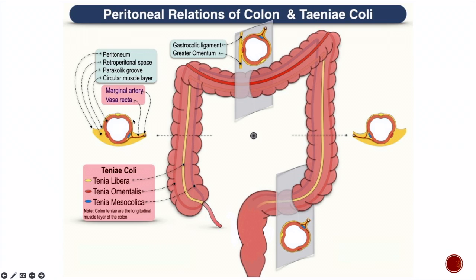The ascending and descending colon are partly covered by visceral peritoneum, and this tinea lies beneath that visceral peritoneum. Similarly, in the descending colon, you have the marginal artery of Drummond and the vasa recta dividing into mural trunks. The anterior free surface has Tinea Libera running on it. The mesenteric border, where blood vessels enter, has Tinea Mesocolica. And from the omental side — opposite to the mesentery attachment — the visceral peritoneum continues with the parietal peritoneum, and there you find Tinea Omentalis.